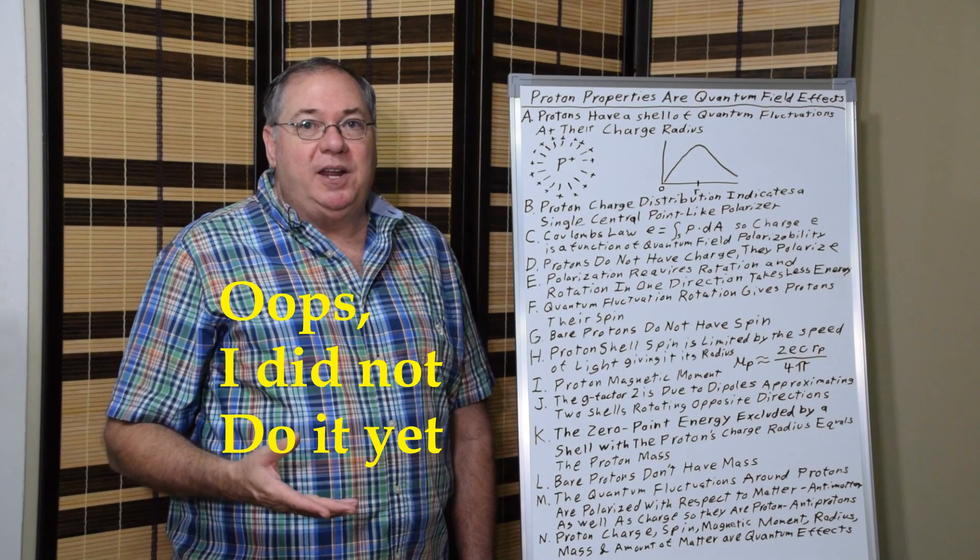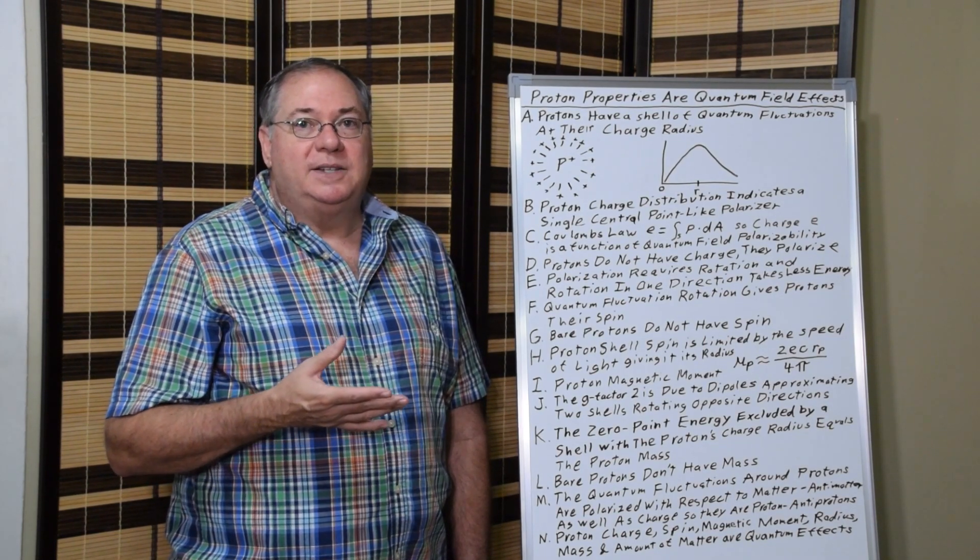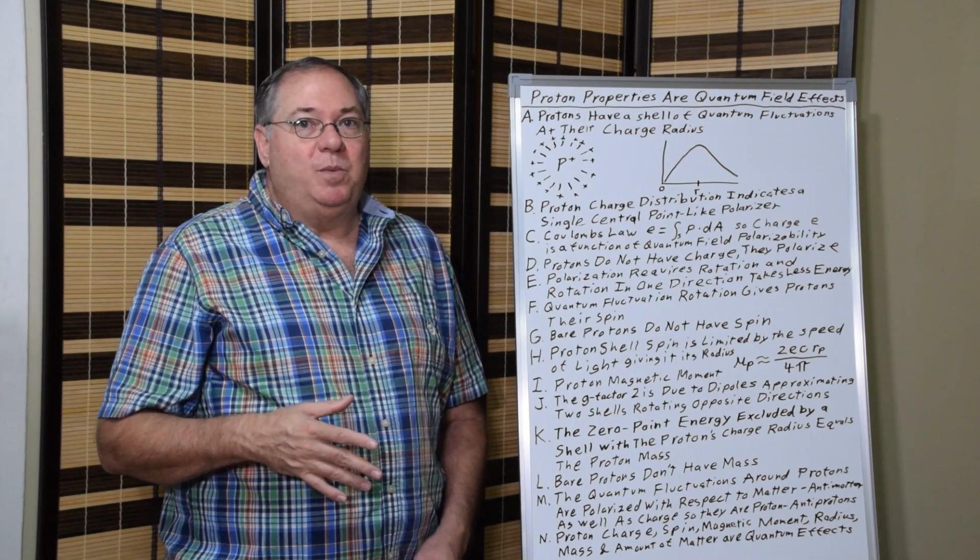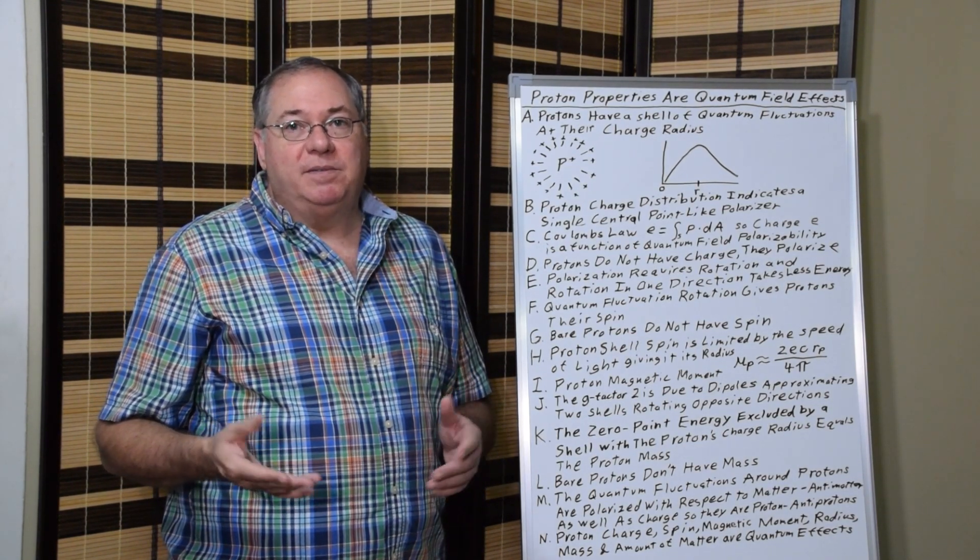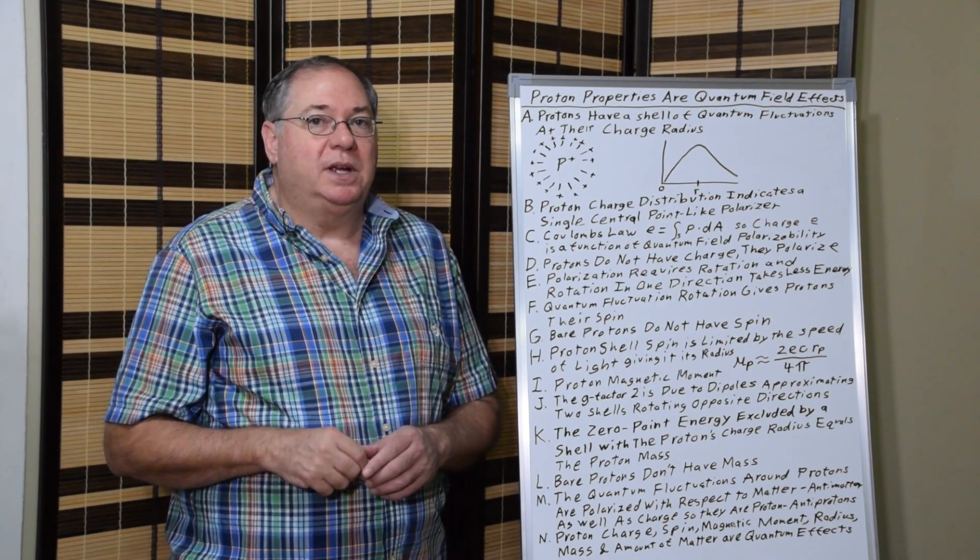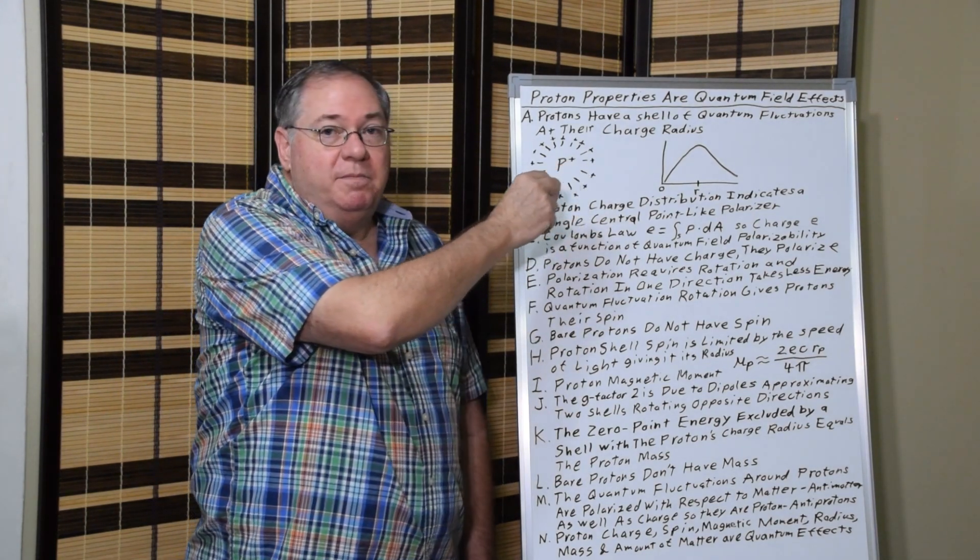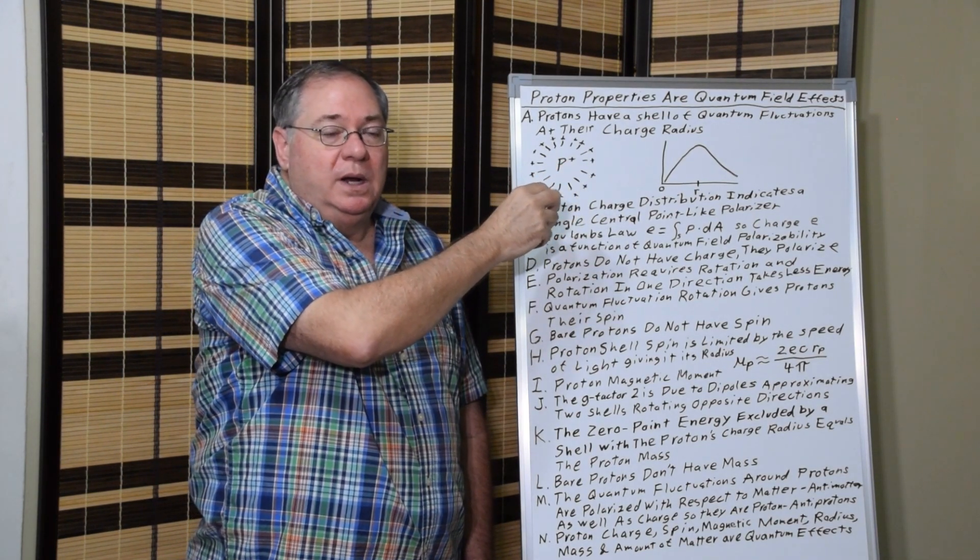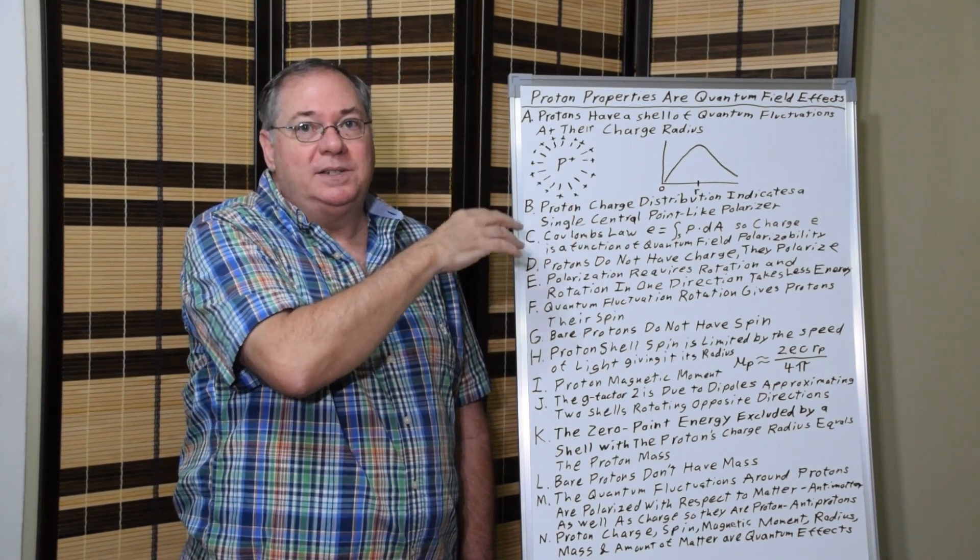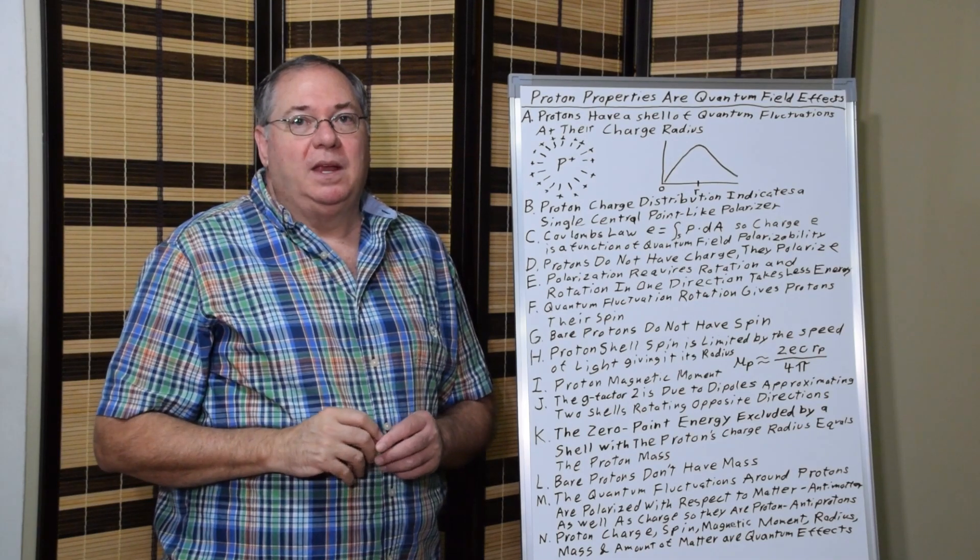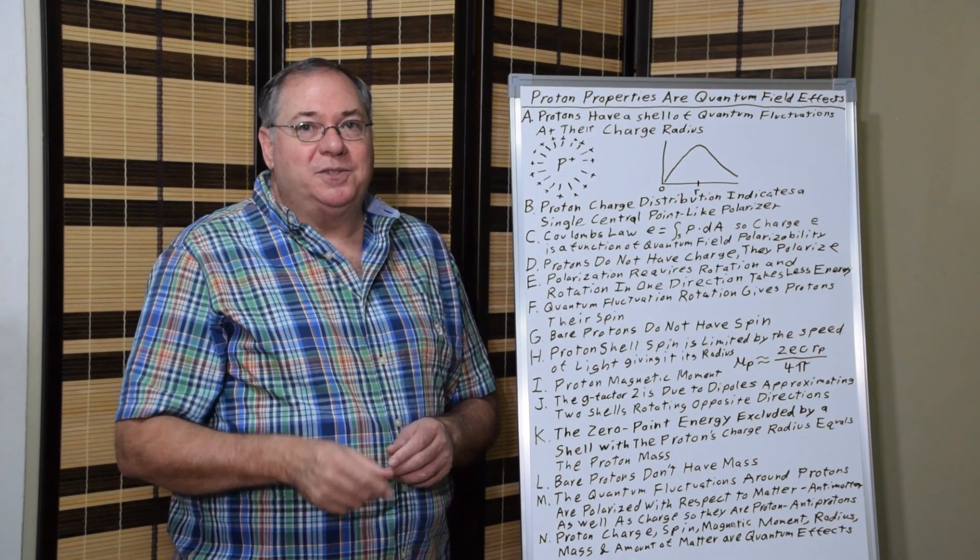Now I did a previous video on the electron. The electron is exactly the same way, except that it ends up with a shell structure at its Compton radius, where its diameter is equal to the Compton wavelength. And that happens because the rate of polarization for a negative charge of its matter is different than the rate of polarization for a positive charge of its matter. And I wrote a little paper on that, and I'll also link below.